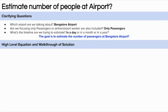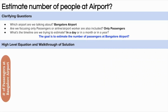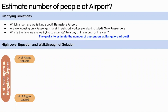Now let's start with the high-level equation and walkthrough of the solution. We need to calculate the number of passengers at Bangalore airport in a day. We'll start with the number of flights that take off and land at Bangalore airport, because we need to account for people going from Bangalore to other places and people coming from other places to Bangalore. Once we have the number of flights taking off and landing, we sum them up to get the total number of flights.